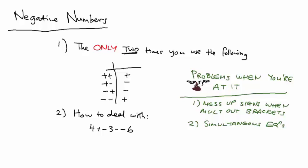You've got to know how it works when you've either got one negative number or two negative numbers. And if there's any part of you which is not 100% sure how to do this, you've got to get to know this.